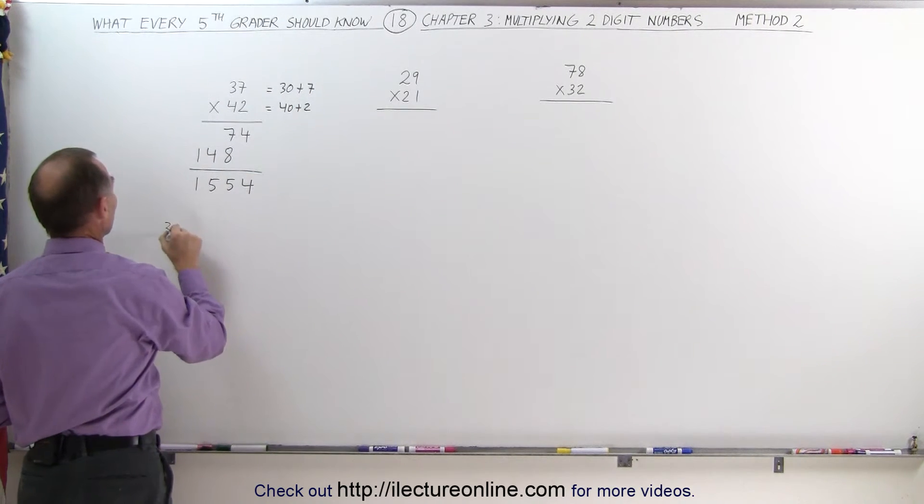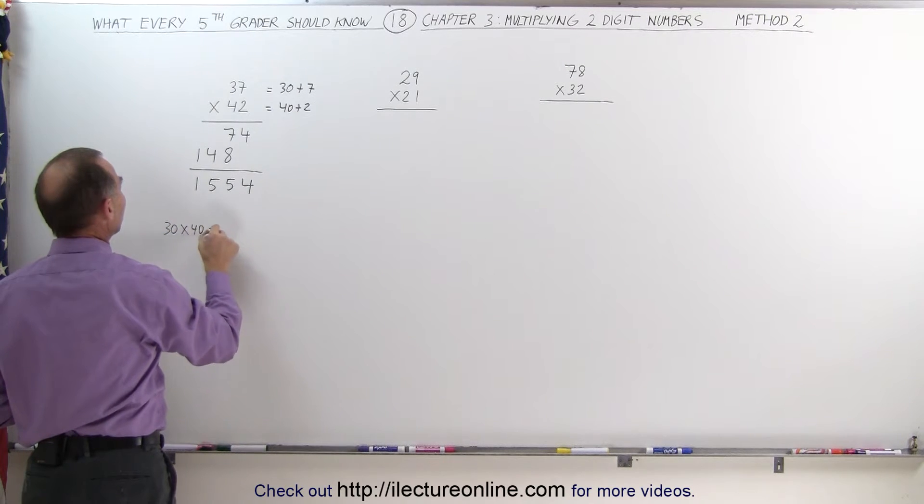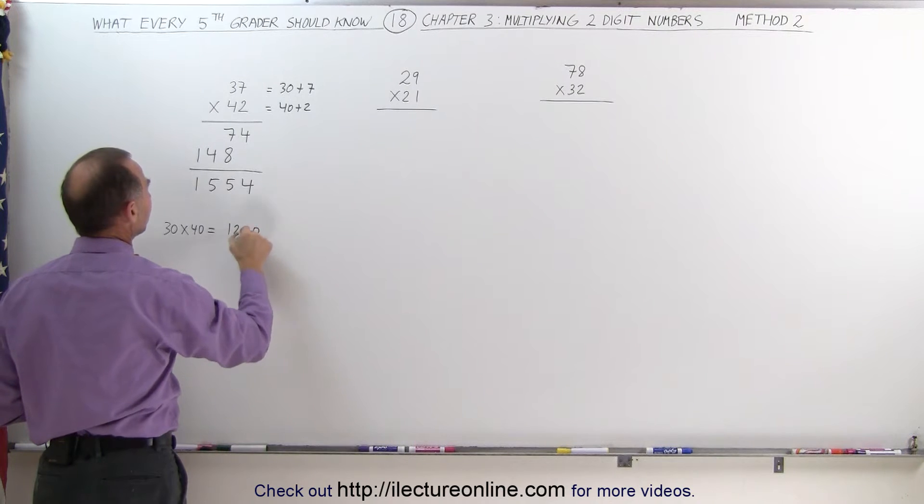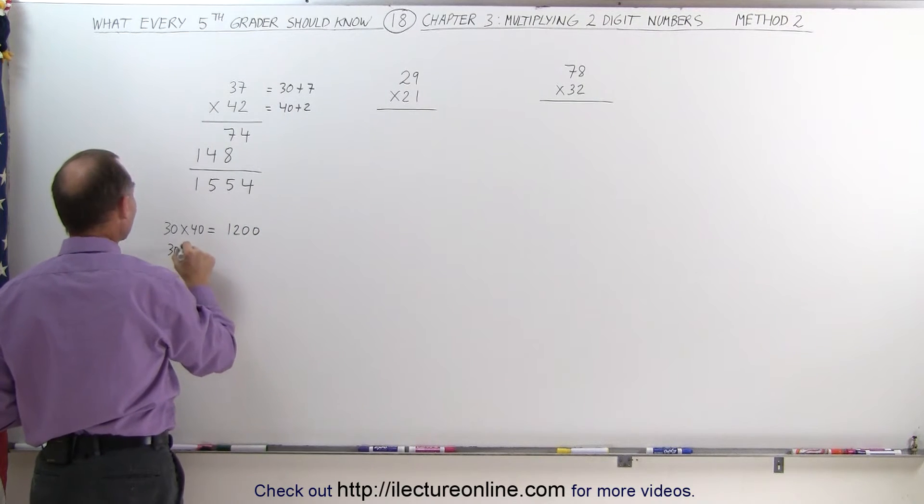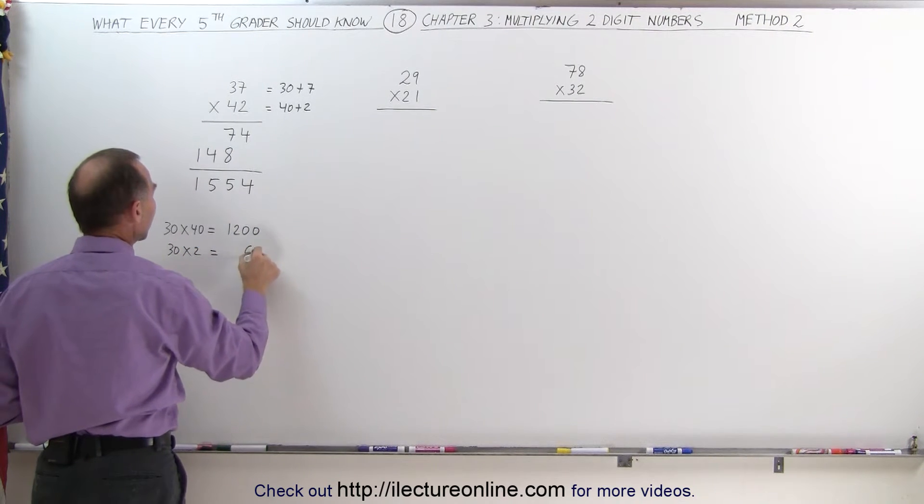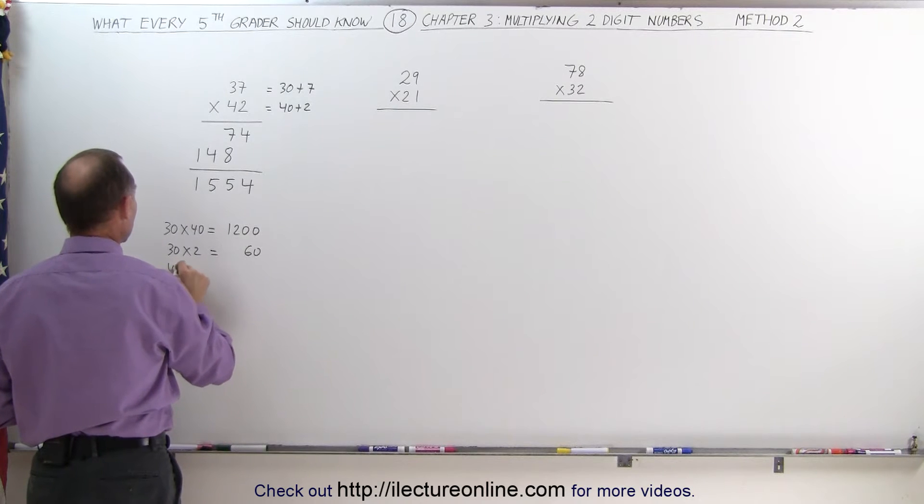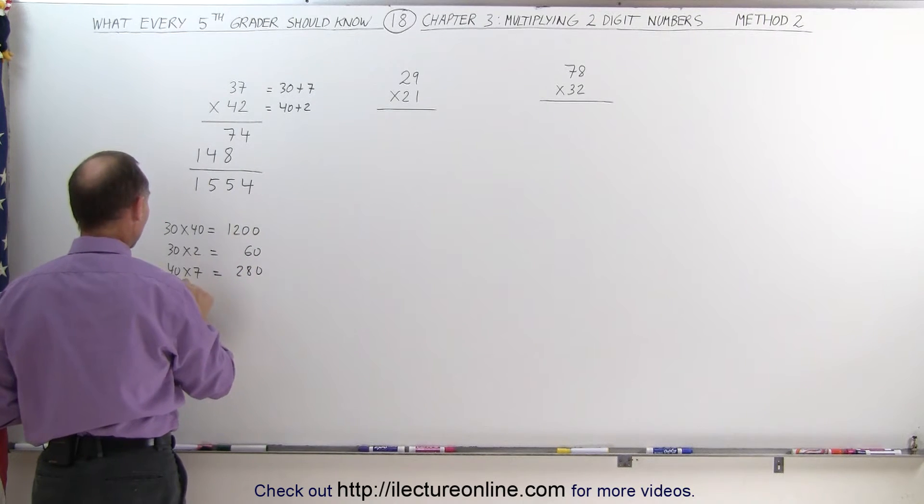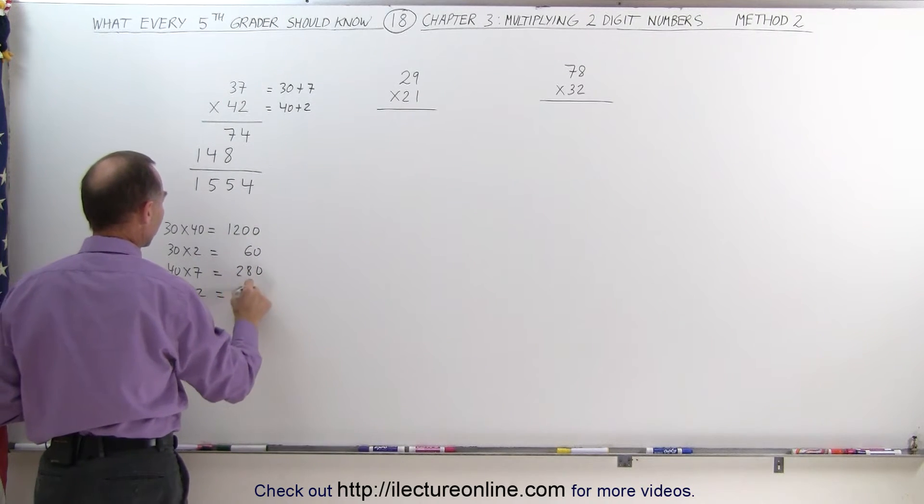In other words, 30 times 40 is equal to, well 3 times 4 is 12, add two zeros gives me 1200. 30 times 2 is equal to 60. 40 times 7, well 4 times 7 is 28 plus 0 is 280. And finally 7 times 2 is equal to 14.